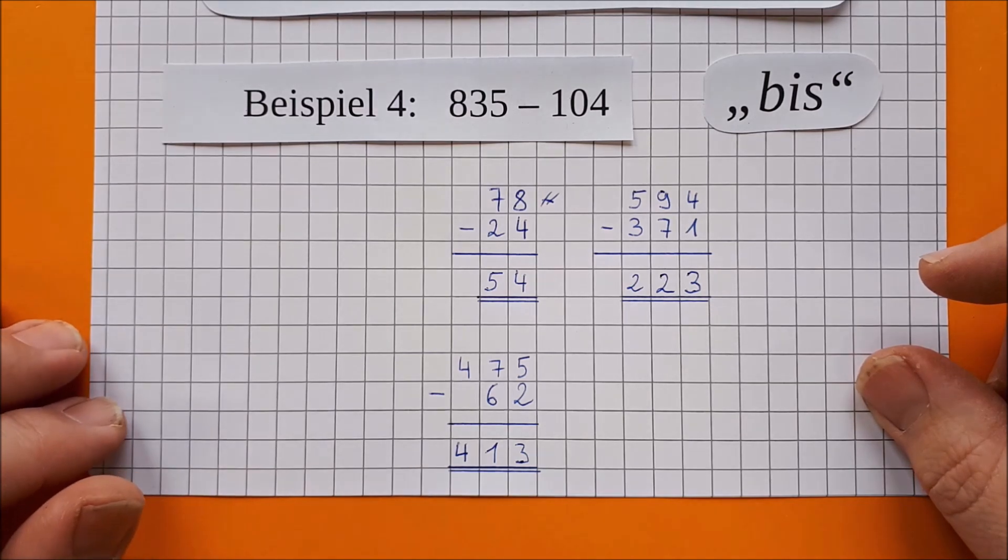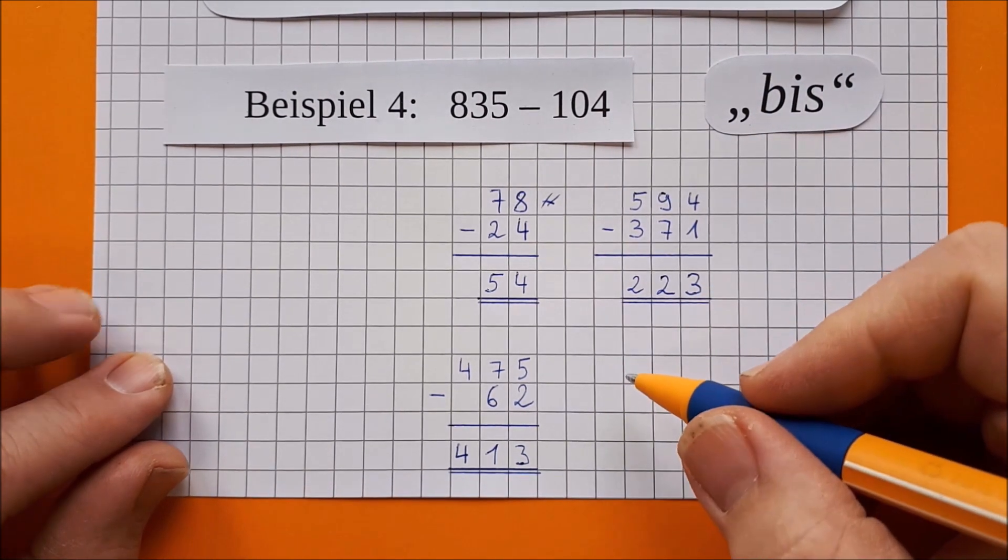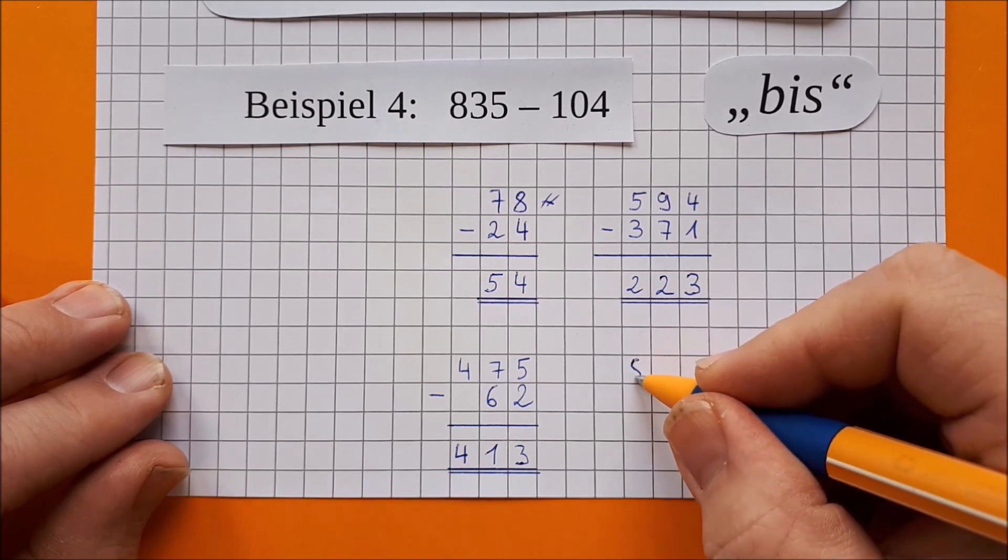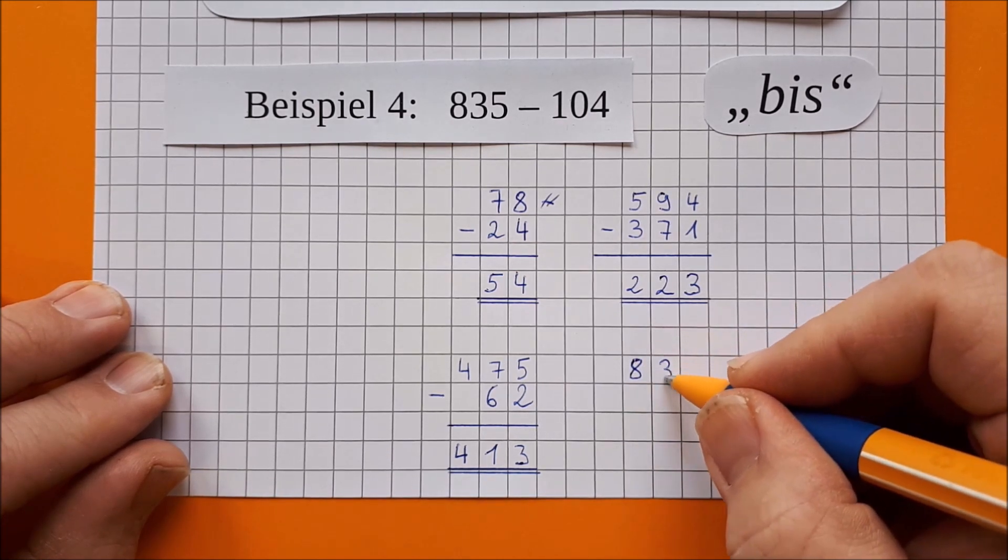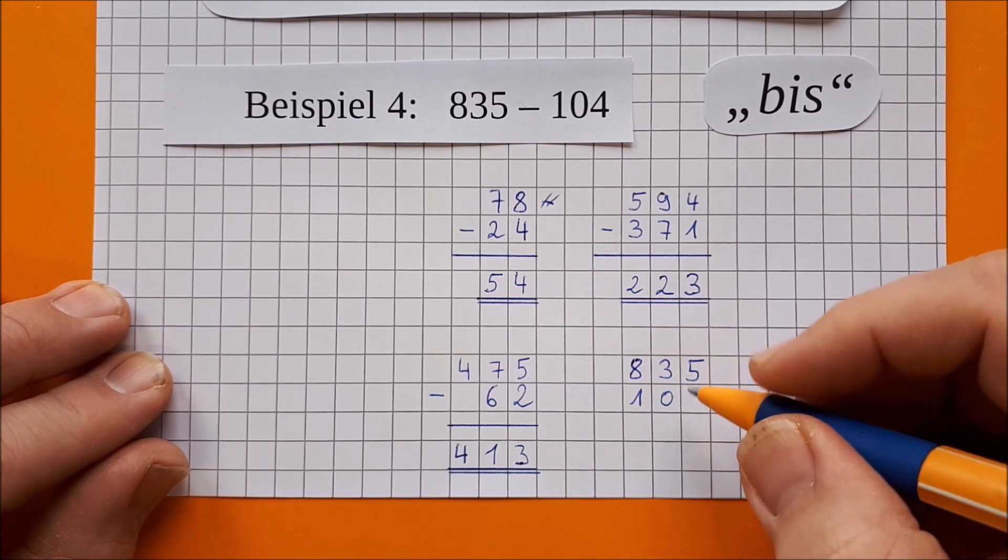Beispiel 4. Fällt euch gleich auf der Sonderfall. Ah, es ist die 0. Nun, diese 0 hier heute ist gar kein Sonderfall. Ich schreibe die Zahl schon mal wieder auf. 835, denn ihr werdet sehen, es rechnet sich genauso, als wenn da eine andere Ziffer stände.